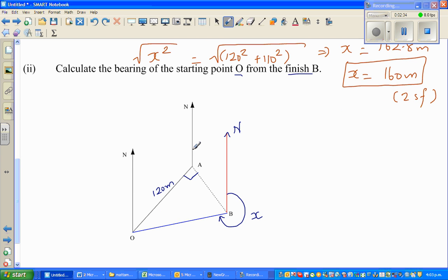We also know that this bearing is given to be 120. Using the same, this angle and this angle are co-interior angles. This angle and this angle add up to 180, so this is 120 degrees and this is 60 degrees. Now we want to find this angle x. If we call the angle inside the triangle y.